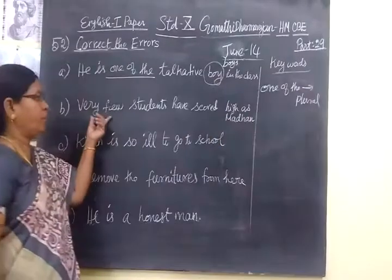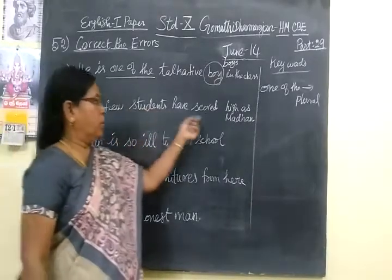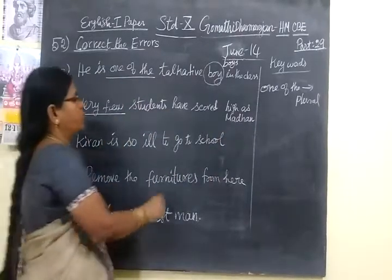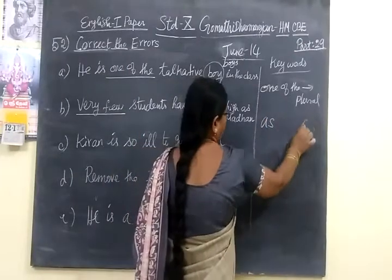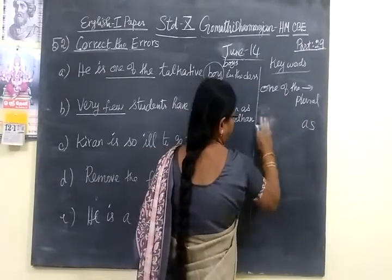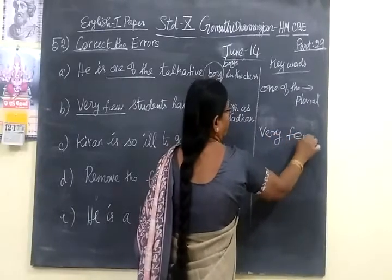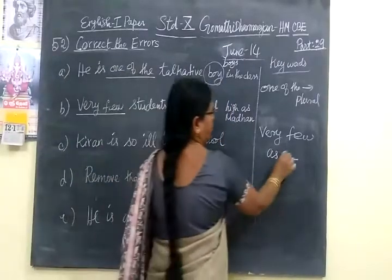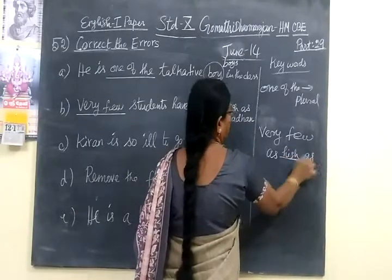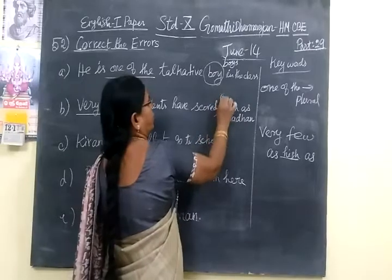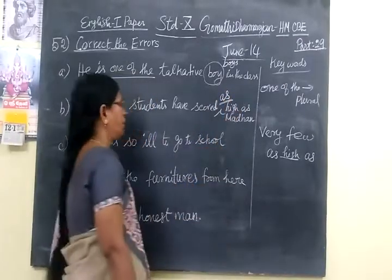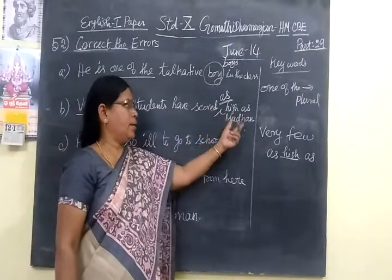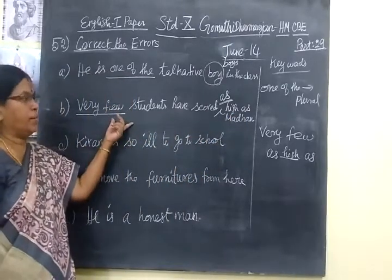Next: 'Very few students have scored as high as model.' This is positive degree — the keyword is 'very few.' Therefore you have to use 'as...as.' The correction is: 'Very few students have scored as high as model.' When you find 'very few,' use the 'as...as' structure for positive degree.